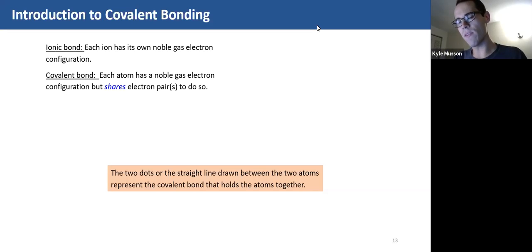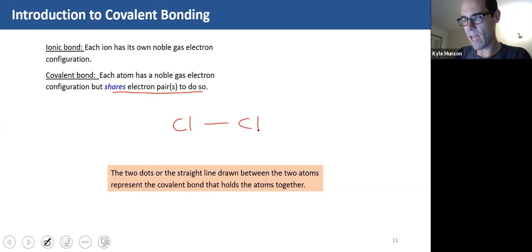For a covalent bond, it's a little different. Each atom has a noble gas electron configuration but shares electron pairs to do so. So for example, let's talk about the bond between two chlorine atoms in this case.